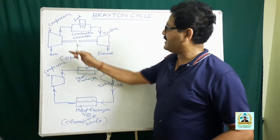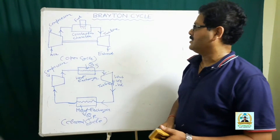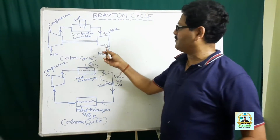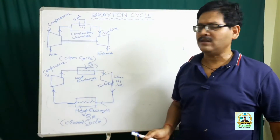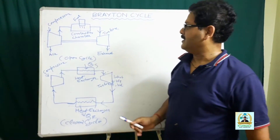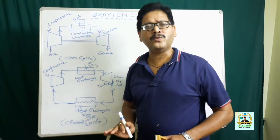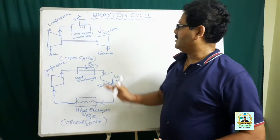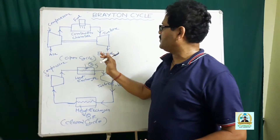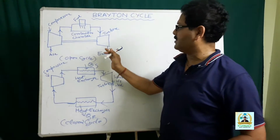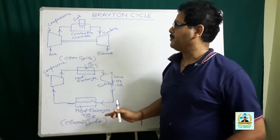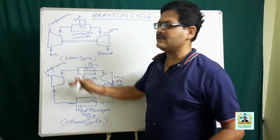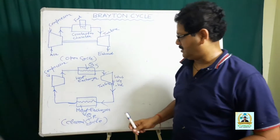As far as the compressor is concerned, the compressor is driven by the turbine, and the net work output developed is the difference between the work developed in the turbine and the work consumed in the compression.